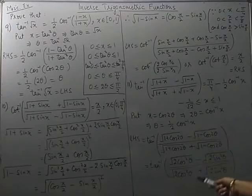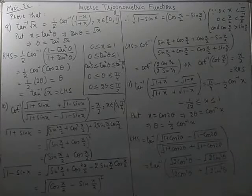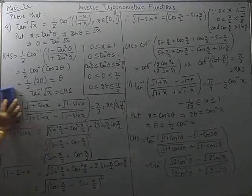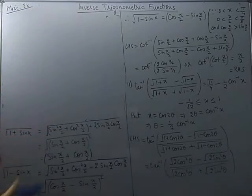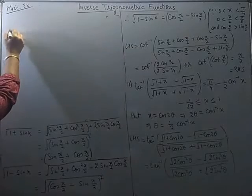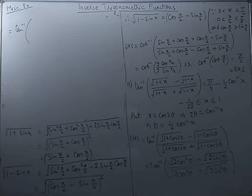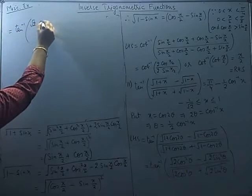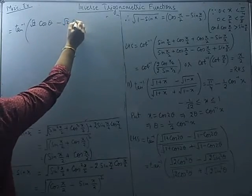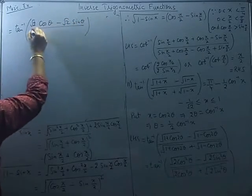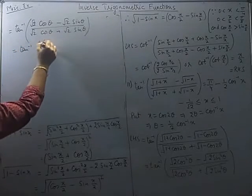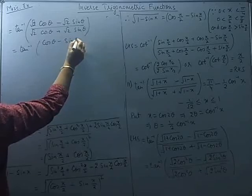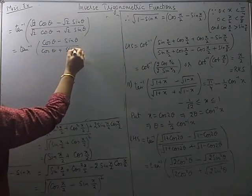Replacing x with cos 2θ in the left hand side and recalling the results: 1 + cos 2θ = 2cos²θ and 1 − cos 2θ = 2sin²θ. So the expression reduces to tan inverse of (√(2cos²θ) − √(2sin²θ)) over (√(2cos²θ) + √(2sin²θ)), which gives tan inverse of (√2 cosθ − √2 sinθ) over (√2 cosθ + √2 sinθ). The √2 factors cancel, leaving (cosθ − sinθ) in the numerator and (cosθ + sinθ) in the denominator.